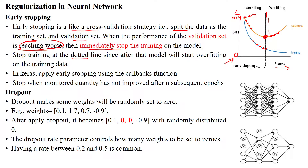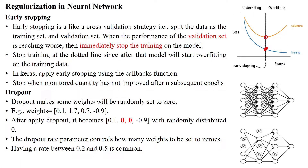After this dotted line, the error is increasing. The difference between the training error and testing error becomes high. If you have high variance between the training error and validation error, the model will reach overfitting. To avoid overfitting, we stop training at the dotted line — that is called the early stopping point. In Keras, we can apply early stopping using the callback method.